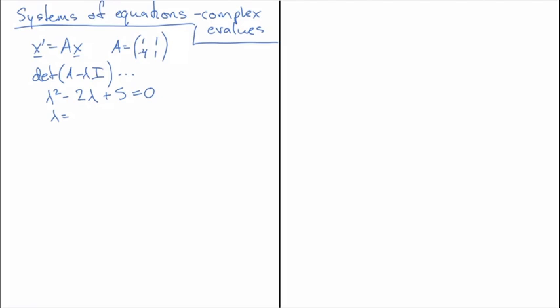We use the quadratic formula on this and get that lambda is equal to 2 plus or minus the square root of 2 squared minus 4 times 5 times 1, all divided by 2. Simplifying, under the square root we have 4 minus 20, which is minus 16, giving us 4 divided by 2 times i. So our eigenvalues are 1 plus or minus 2i.